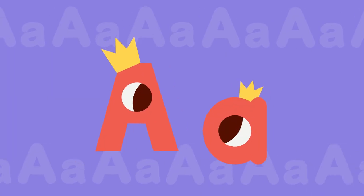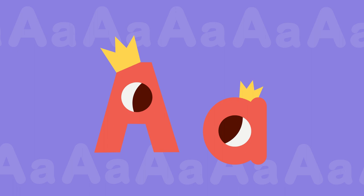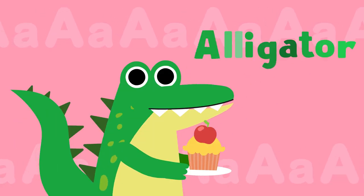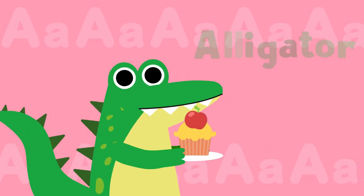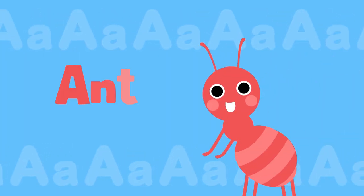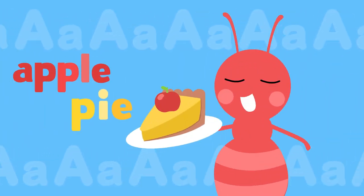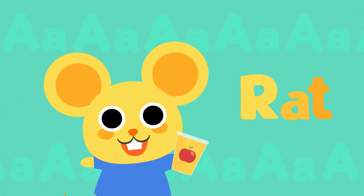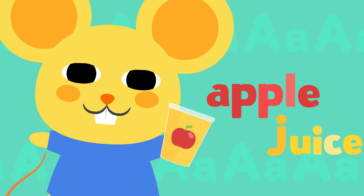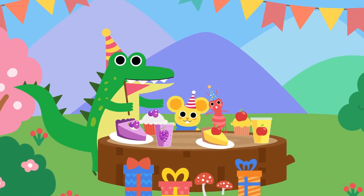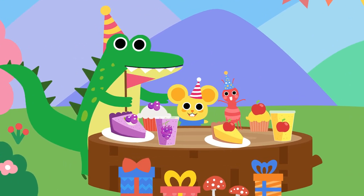Short A sounds like a, a, a. An alligator has an apple cake. An ant has an apple pie. A rat has apple juice. Happy, happy party!